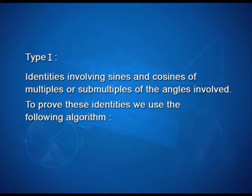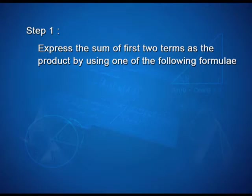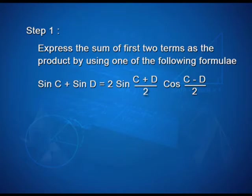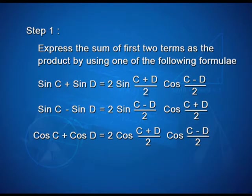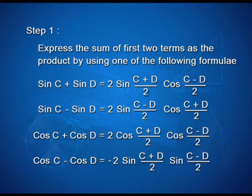Let us take up Type 1 identities — identities involving sines and cosines of multiples or sub-multiples of the angles. To prove these identities, we use the following algorithm. In step 1, express the sum of the first two terms as a product using one of these formulae: sin C plus sin D equals 2 sin((C+D)/2) cos((C-D)/2); sin C minus sin D equals 2 sin((C-D)/2) cos((C+D)/2); cos C plus cos D equals 2 cos((C+D)/2) cos((C-D)/2); cos C minus cos D equals minus 2 sin((C+D)/2) sin((C-D)/2).